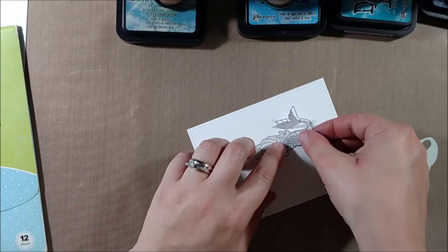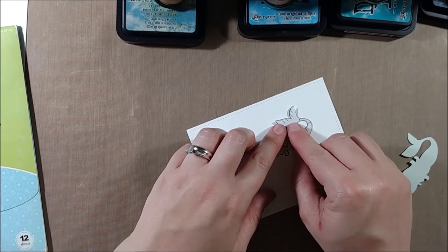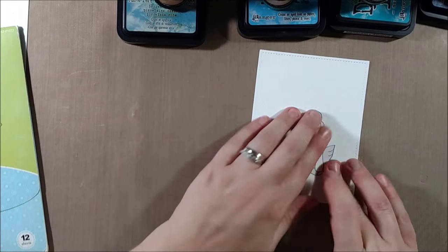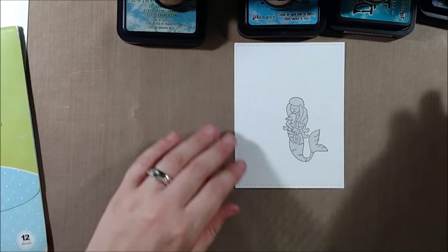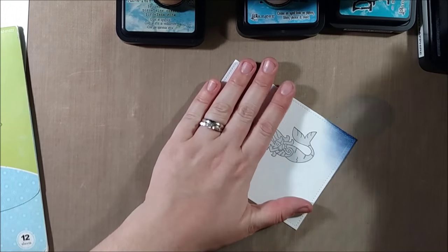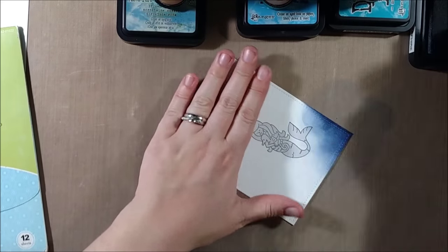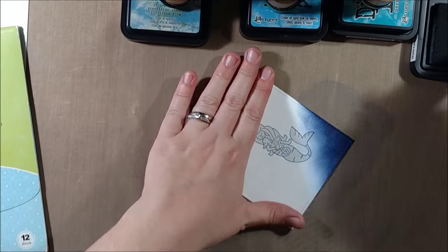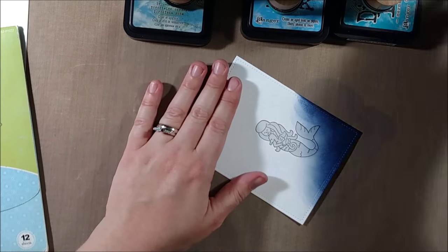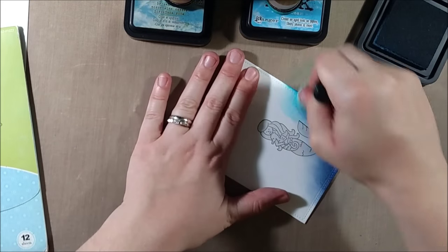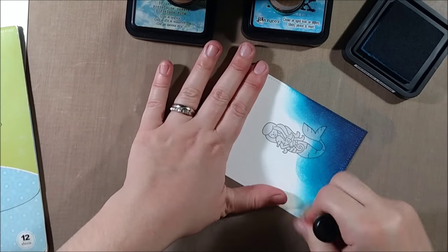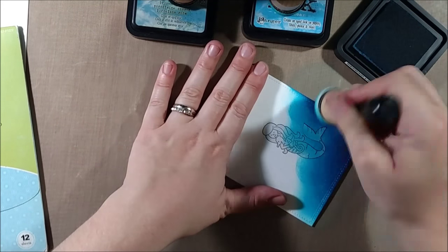And I'm going to be using a variety of Distress inks here in some different blue colors. I believe I'll be using Broken China, Peacock Feathers and Mermaid Lagoon. Chipped Sapphire is this darkest one here that I'm using. What I wanted to do was create the effect of some light streaming into the ocean. So I knew that I wanted to create kind of an ombre effect where the blues are going to get darker as they go across the scene.